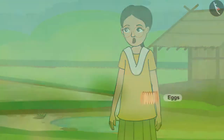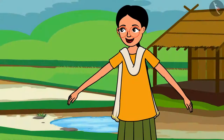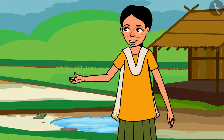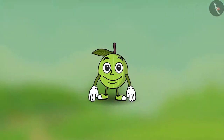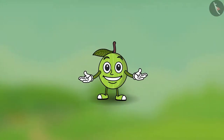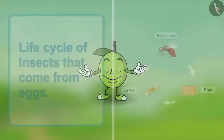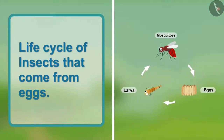Mosquitoes are first born in the form of eggs, then they become larvae, and finally the larvae grow into mosquitoes. Although a mosquito is a tiny insect, it is the cause of many diseases. Can you make a list of insects that first are in the form of eggs and then turn into larvae? Please write the life cycle of these insects.